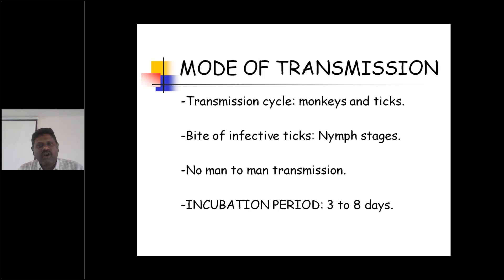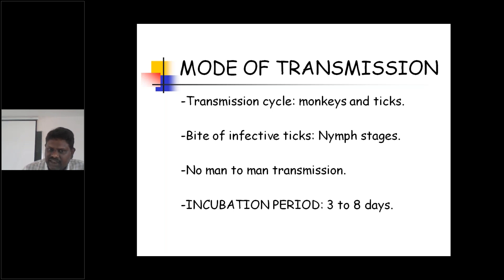Looking at the mode of transmission: the transmission cycle involves monkeys and ticks. Transmission takes place from monkeys as well as from ticks. Bite of infective ticks — especially the nymph stages — are more dangerous and are mainly responsible for transmitting the disease to human beings.